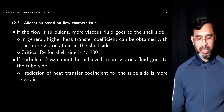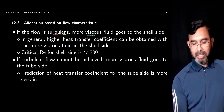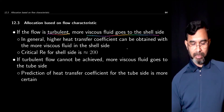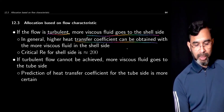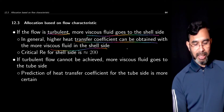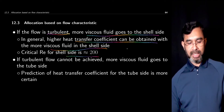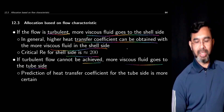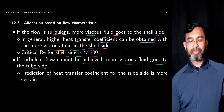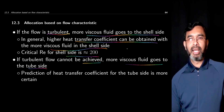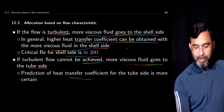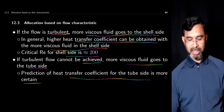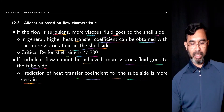Regarding flow characteristics, if the flow is turbulent, the more viscous fluid goes to the shell side because it is easier to create turbulence there. In general, a higher heat transfer coefficient can be obtained with the more viscous fluid on the shell side, and the critical Reynolds number for the shell side is around 200. However, if turbulent flow cannot be achieved, the more viscous fluid goes to the tube side, where higher velocity can be obtained, giving a high Reynolds number and eventually a high heat transfer coefficient. The prediction of the heat transfer coefficient for the tube side is also more certain compared to the complexity and errors in shell side heat transfer calculations.